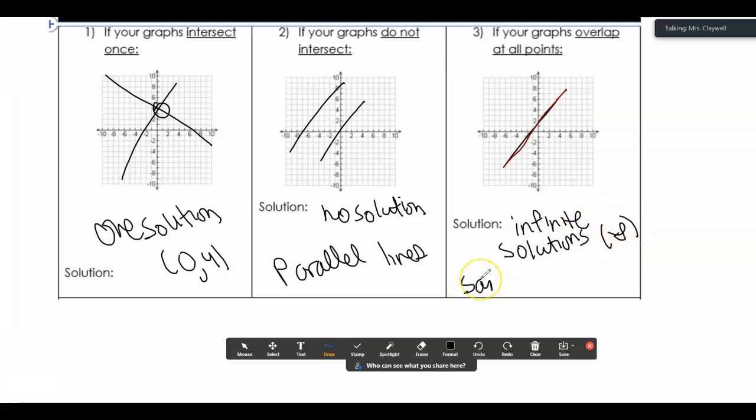This usually means they're the same lines. Because every point they intersect is a solution, and there's an infinitely number of points that those lines intersect or overlap.